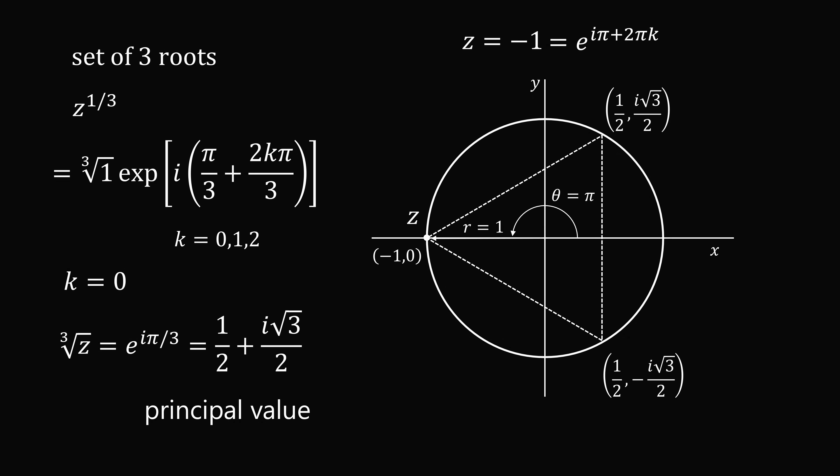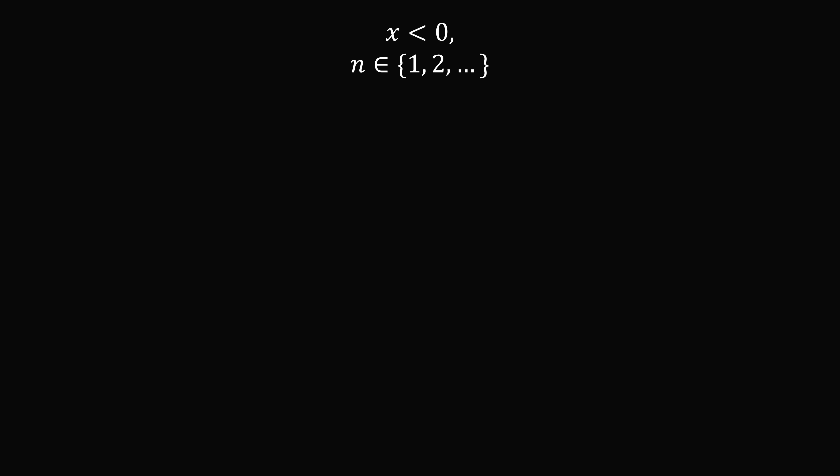So now let's summarize. If we have a negative number, then y is equal to x to the power of n. How does that compare to the nth root of x and x to the power of 1 over n? So y is equal to x to the power of n. Of course, we'll have n solutions here.